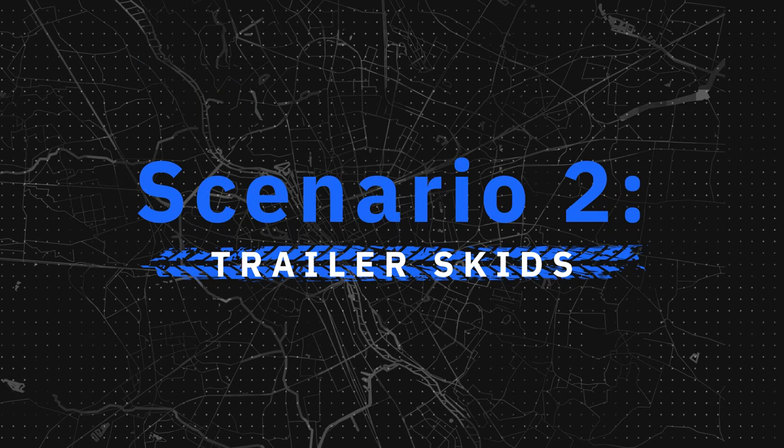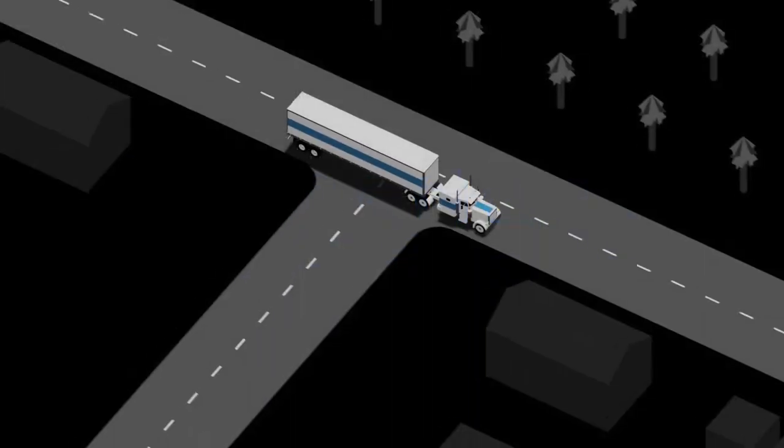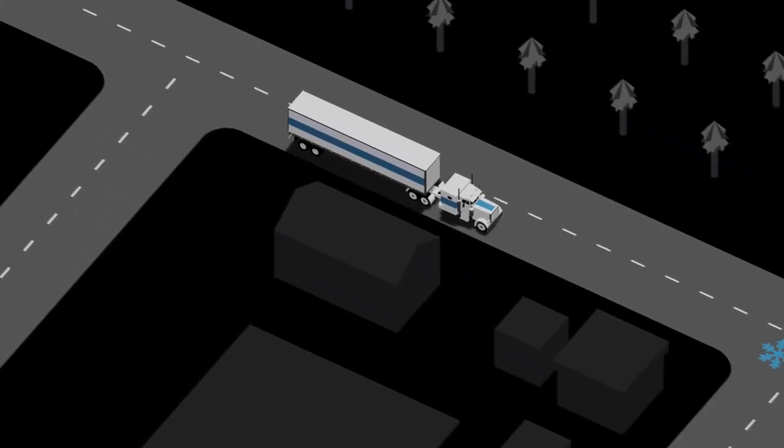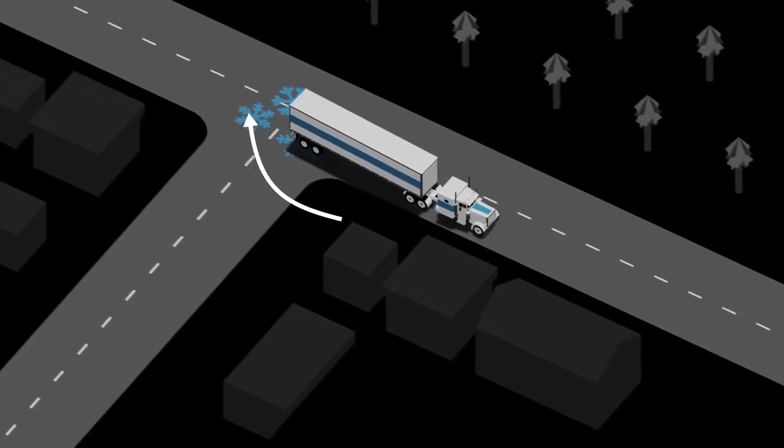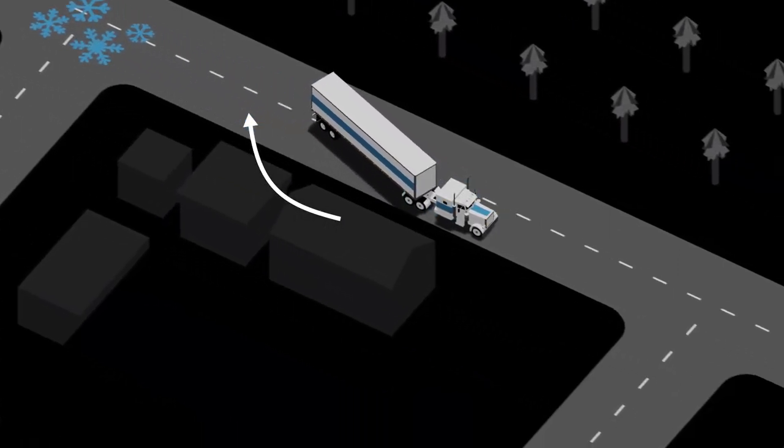Trailer skids occur most often during hard braking events or when poor road conditions cause the trailer to lose traction. When this happens, the trailer will tend to swing out from behind the tractor. This is called a trailer jackknife.